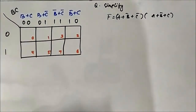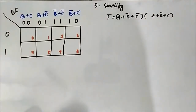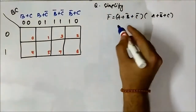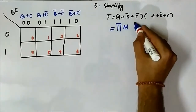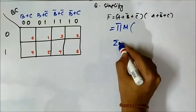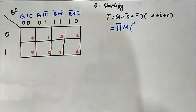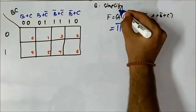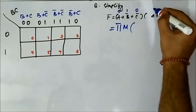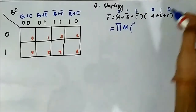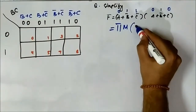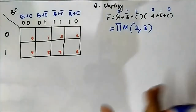Here we have this question: the Boolean expression given is (A + B̄ + C̄) and (A + B̄ + C). If we write it in max term form — POS is written in max term form, SOP is written in min term form. So for (A + B̄ + C̄): A is 0, B̄ means B is 1, C̄ means C is 0 → that is max term 2. For (A + B̄ + C): A is 0, B̄ means B is 1, C is 1 → that is max term 3. So the max term representation is M(2, 3).